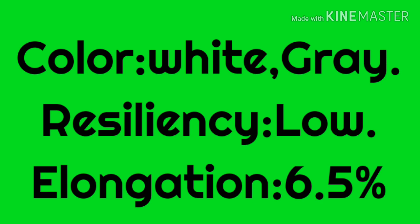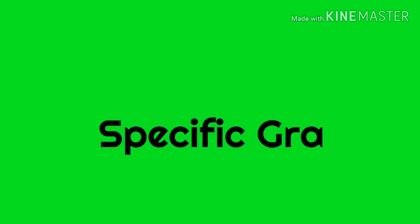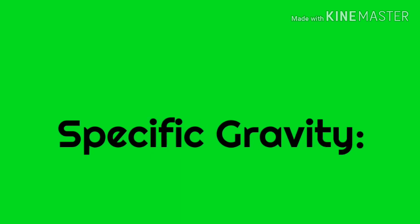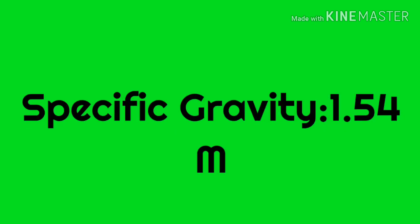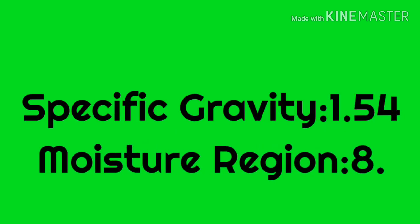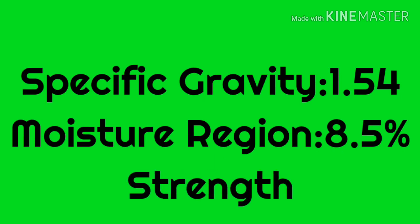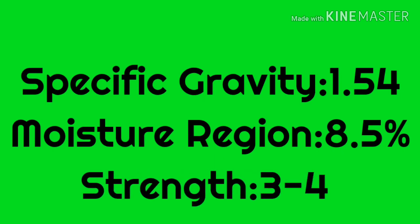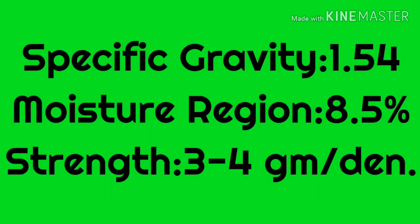Elongation. The elongation rate is 6.5%. Specific gravity — that is, relative density — is 1.54. Moisture regain, meaning relative moisture content, is 8.5%.